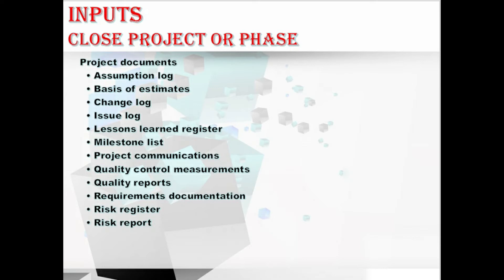Coming to the change log, this input contains the status of all the change requests throughout the project phase. Coming to the issue log, it is used to check there are no open issues. Moving to the lessons learned register, the lessons learned in the phase of the project will be finalized before being entered into the lessons learned repository.